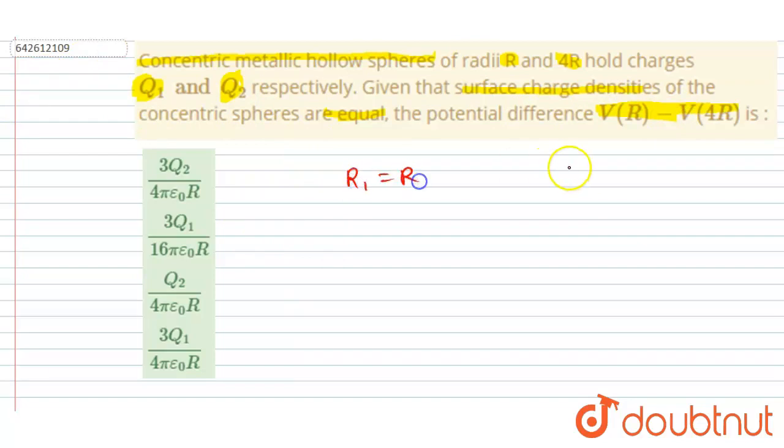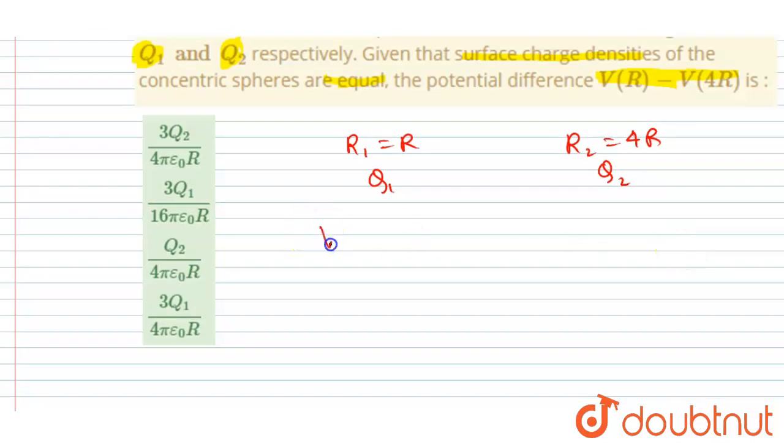Right, so if I calculate the potential of the inner sphere V1, then I will write because of its own charge that will be this, and r1 here is r.